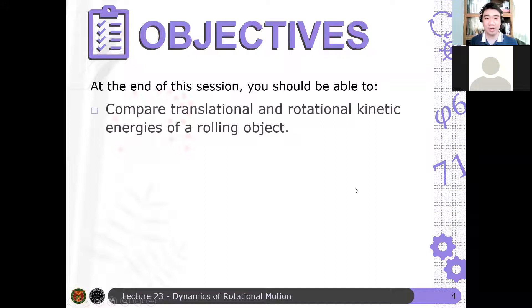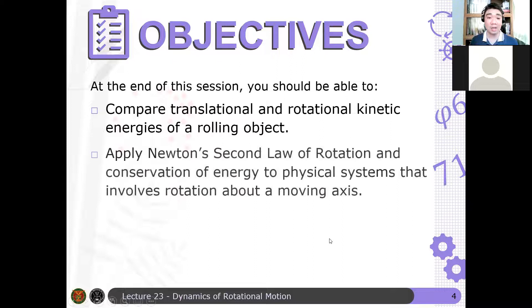At the end of this session, you should be able to: first, compare translational and rotational kinetic energies of a rolling object. Remember, the object is now translating and rotating, so there should be two terms in the kinetic energy — rotational kinetic energy because the object is rolling, and translational kinetic energy because the center of mass is translating. Second, apply Newton's second law for rotation and conservation of energy to physical systems involving rotation about a moving axis.